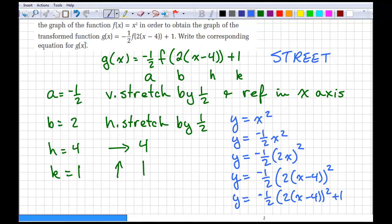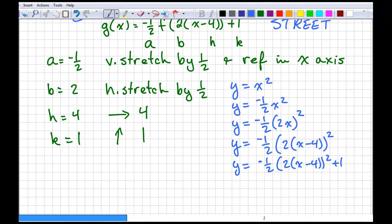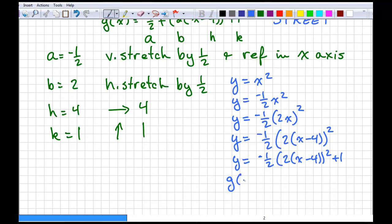That's our function. So, when they say write the corresponding equation for g(x), I could do the same thing here and just go g(x) is equal to negative 1 half, 2, (x minus 4), squared, plus 1.